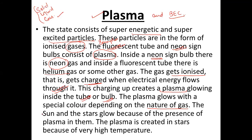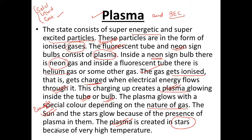Another example is the sun and stars. Sun and stars glow because of the presence of plasma in them. Plasma is created in stars due to high temperature. These are examples of plasma.